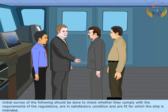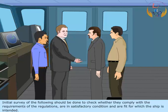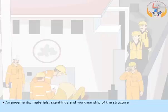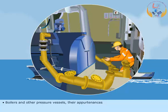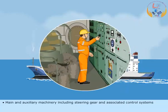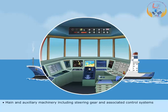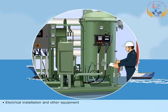The initial survey of the following should be done to check whether they comply with the requirements of the regulations, are in satisfactory condition, and are fit for the service for which the ship is intended: arrangements, materials, scan links and workmanship of the structure; boilers and other pressure vessels and their appurtenances; main and auxiliary machinery including steering gear and associated control systems; and electrical installation and other equipment.